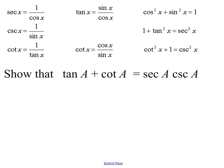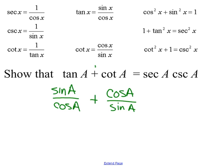Let's try another one: tangent of a plus cotangent of a equals secant of a times cosecant of a. When doing these proofs, think about what each side looks like — what's the same, what's different. Over here I have two different things added up, and over here I have two different things multiplied. The left side is still the more complicated side, so I'll use my same first step of turning everything into sine and cosine. Tangent of a is sine of a over cosine of a, and cotangent of a is cosine of a over sine of a.